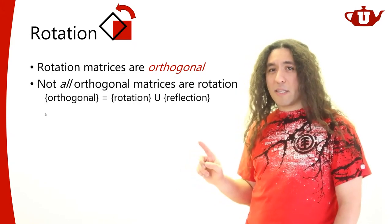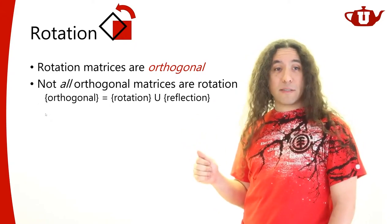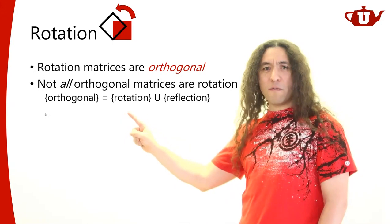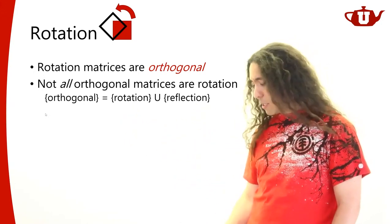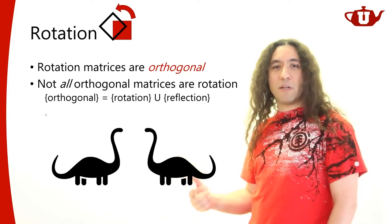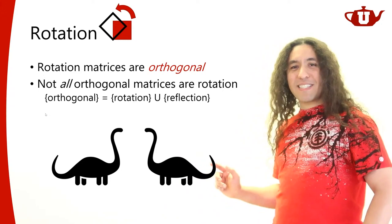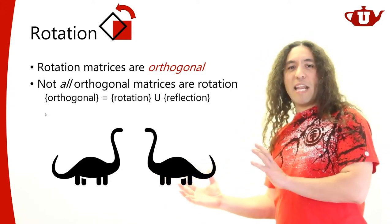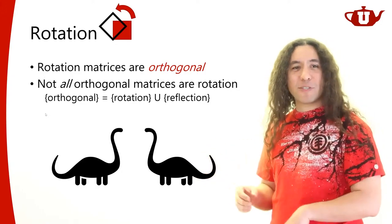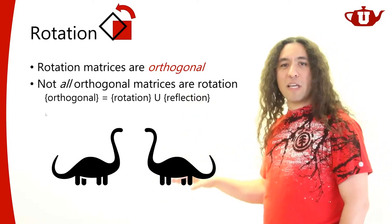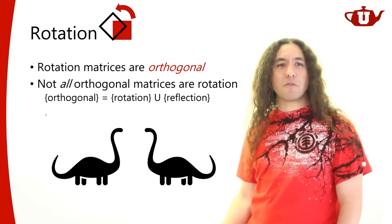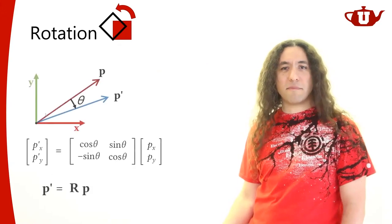Not all orthogonal matrices are rotation matrices — orthogonal matrices also include reflections. Reflection can be thought of as rotation in a higher dimension. So orthogonal matrices include rotations and reflections. But it's okay to think about orthogonal matrices as essentially rotation matrices — it's pretty close.